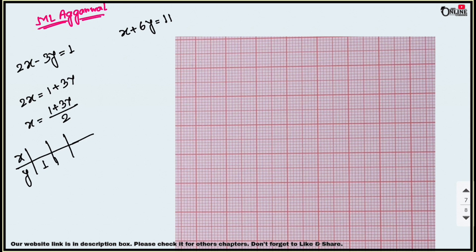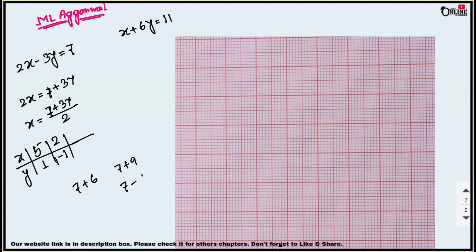Choose values of y so x is a whole number. Note: I made a correction — the numerator is 7, not 1, so x equals (7 plus 3y) divided by 2. If y equals 1: (7 plus 3) divided by 2 equals 5. If y equals minus 1: (7 minus 3) divided by 2 equals 2. If y equals minus 3: (7 minus 9) divided by 2 equals minus 1.